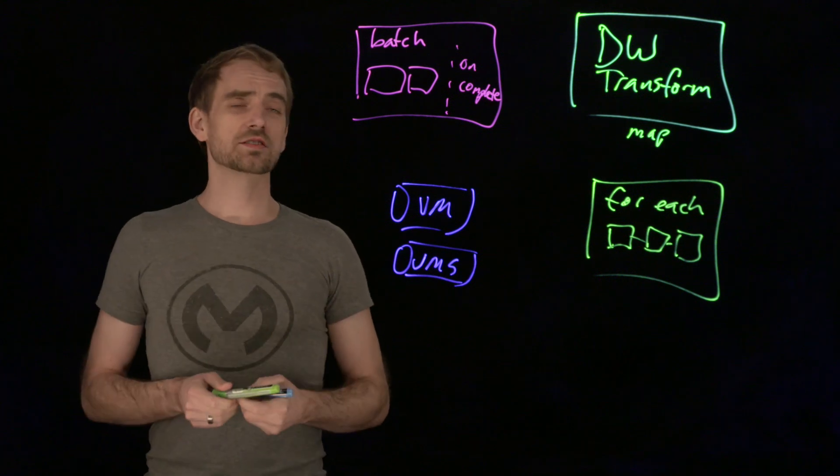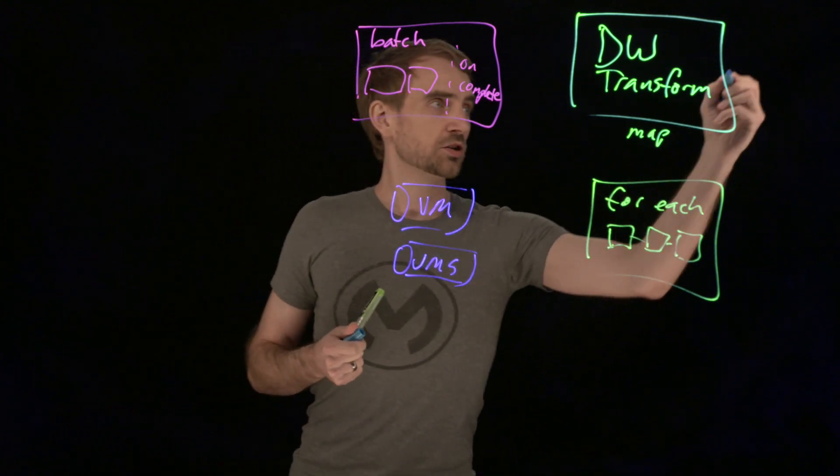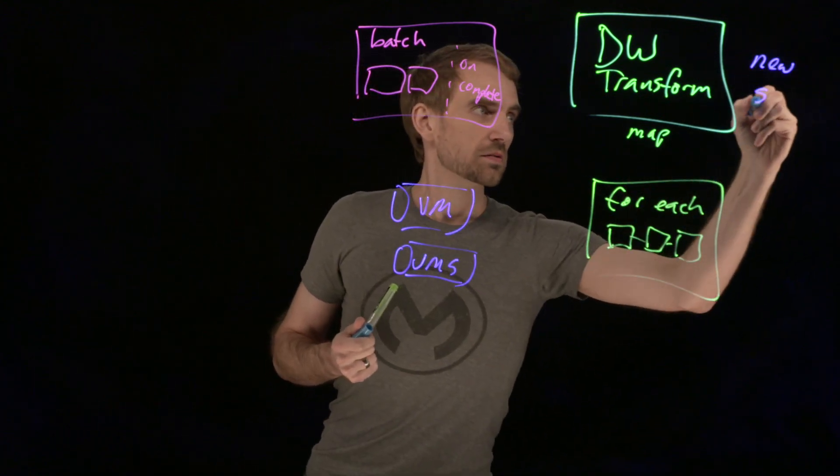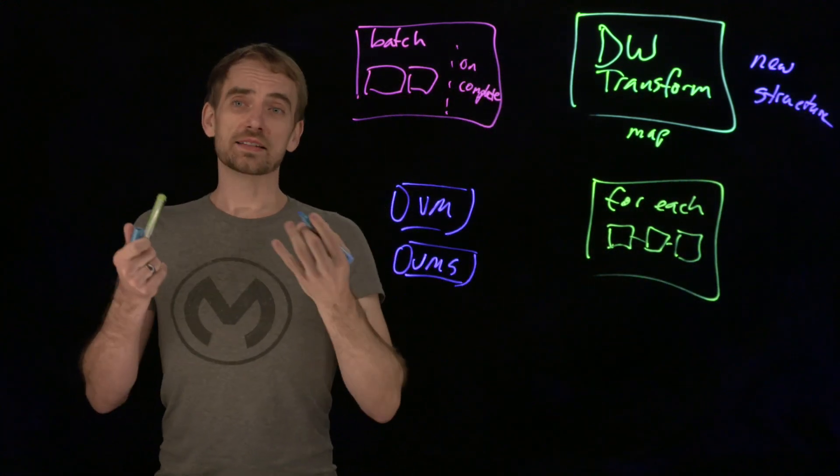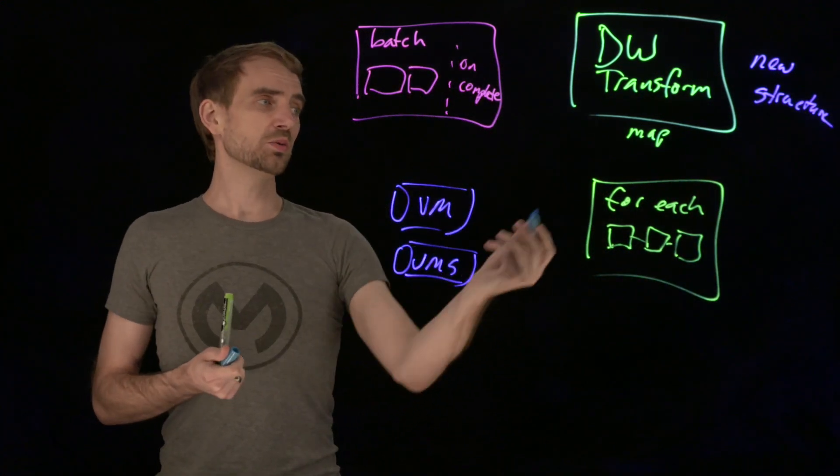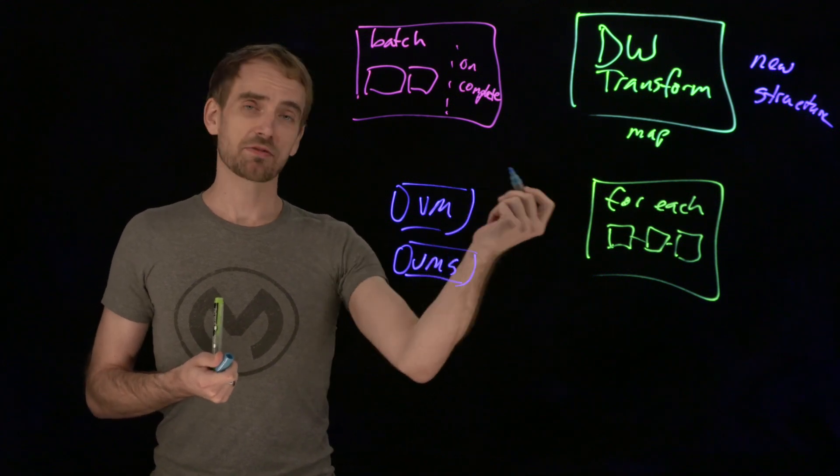So to summarize the options, when you're wanting to transform structure, use data weave transform. It takes in something, produces something new if you use the map operator or map function.